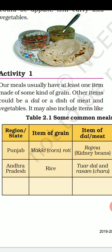Exactly like this, we have to write 3 more regions and states and their food items. You have to prepare the whole meal — it's just like preparing a thali. You will write down 3 more states and their food items.